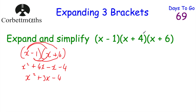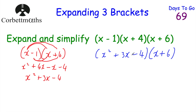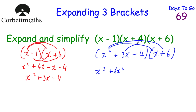Now I'll replace those first two brackets with (x² + 3x − 4) and multiply by (x + 6). Multiplying each term by x: x squared times x is x cubed; x squared times 6 is plus 6x squared. Multiplying each term by 3x: 3x times x is plus 3x squared; 3x times 6 is plus 18x. Finally, multiplying each term by minus 4: minus 4 times x is minus 4x; minus 4 times 6 is minus 24.